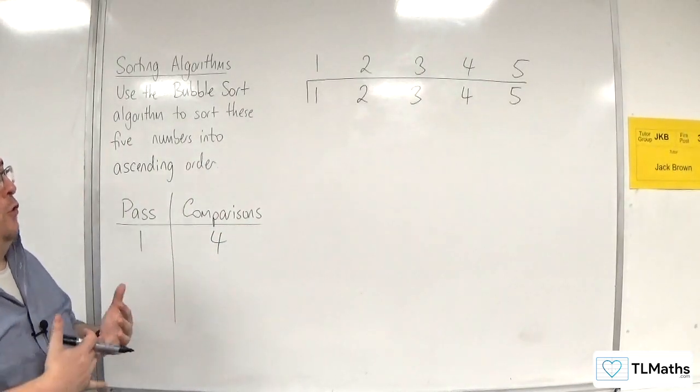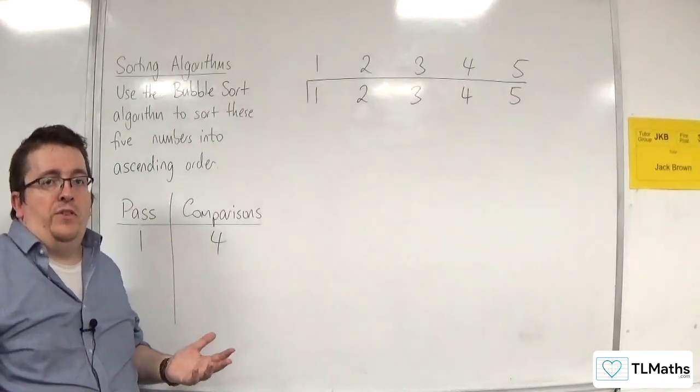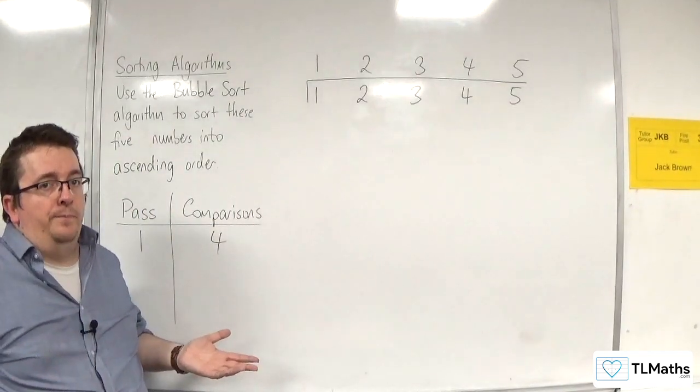But if you had 100 numbers already in ascending order and used the bubble sort, it would take 99 comparisons.